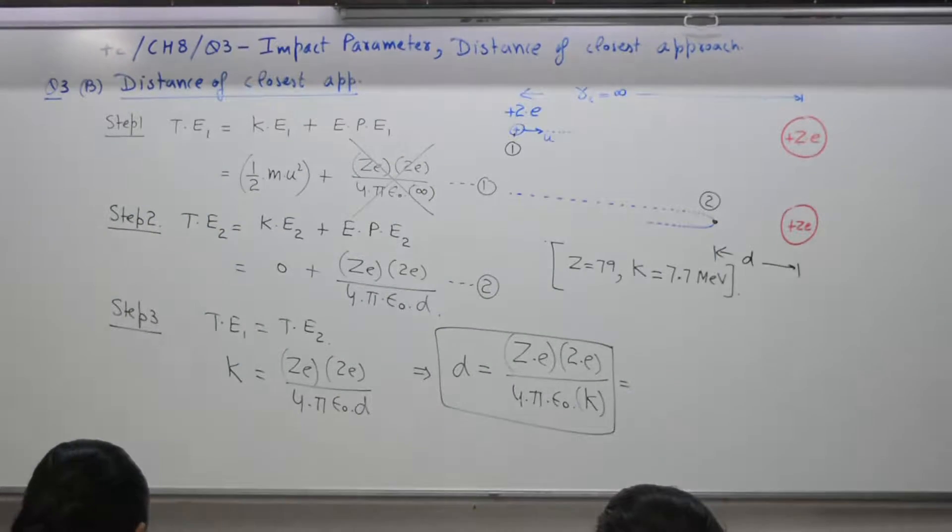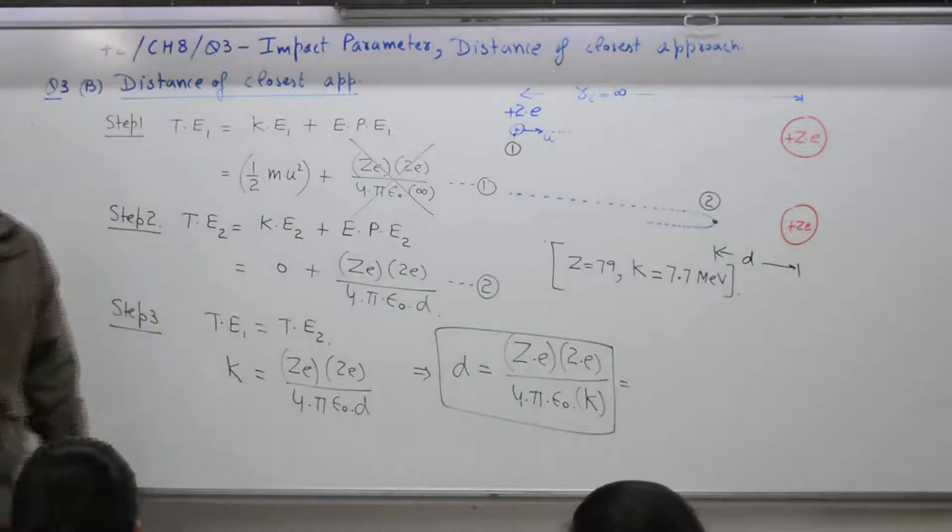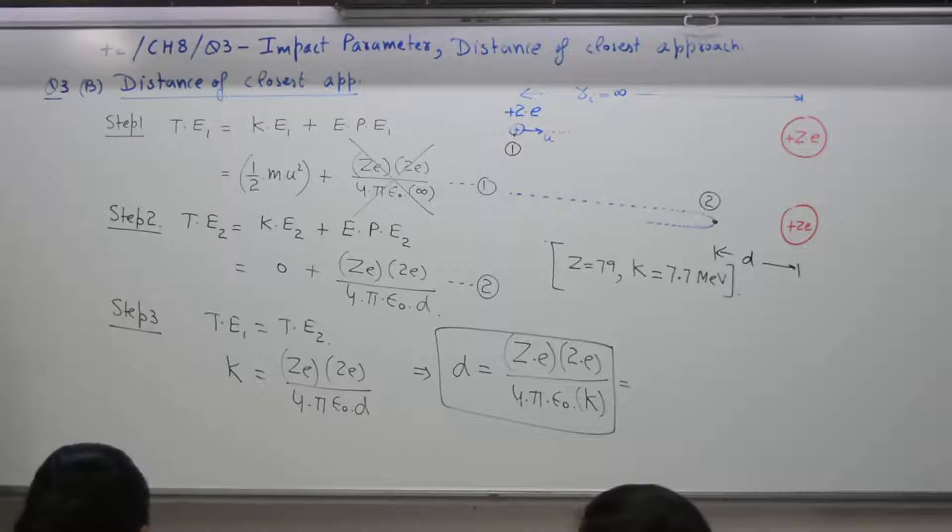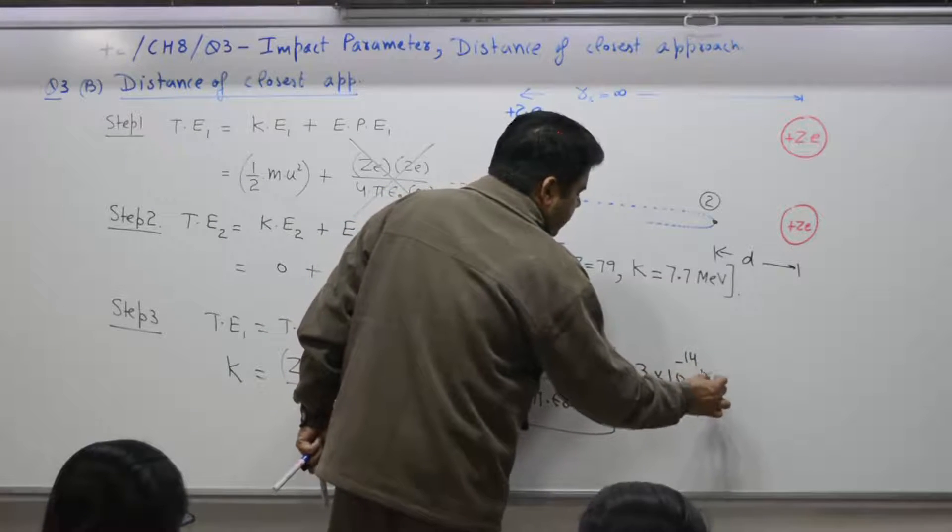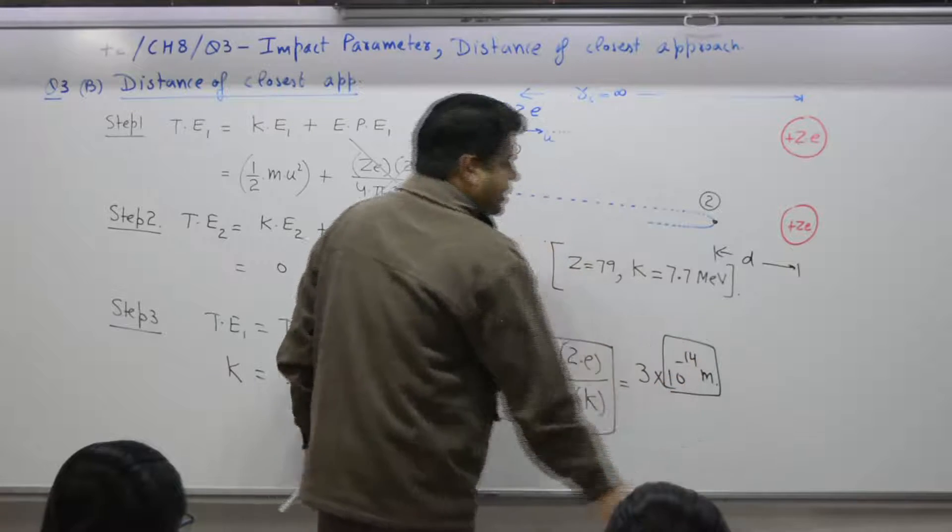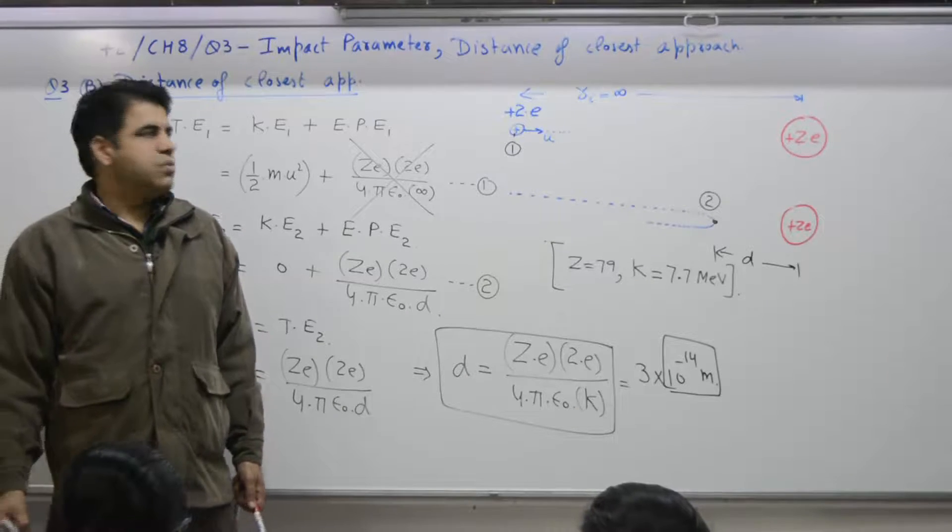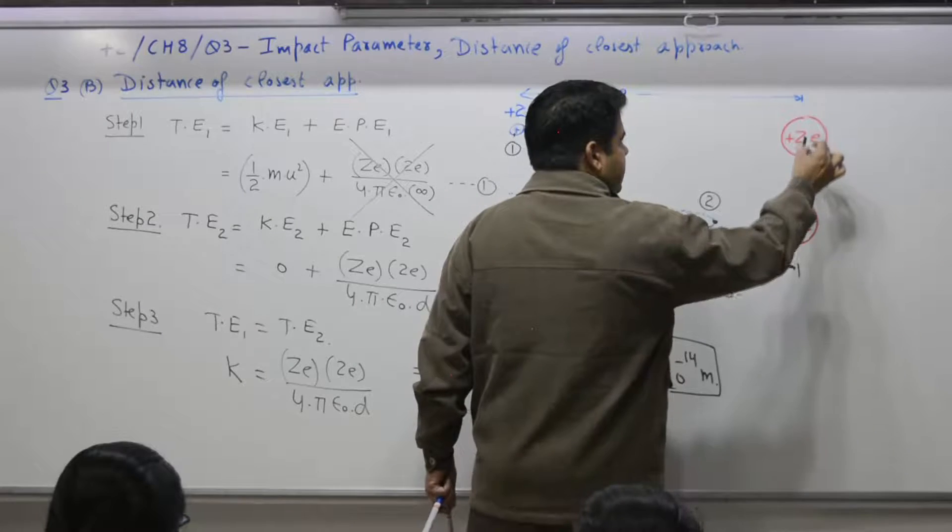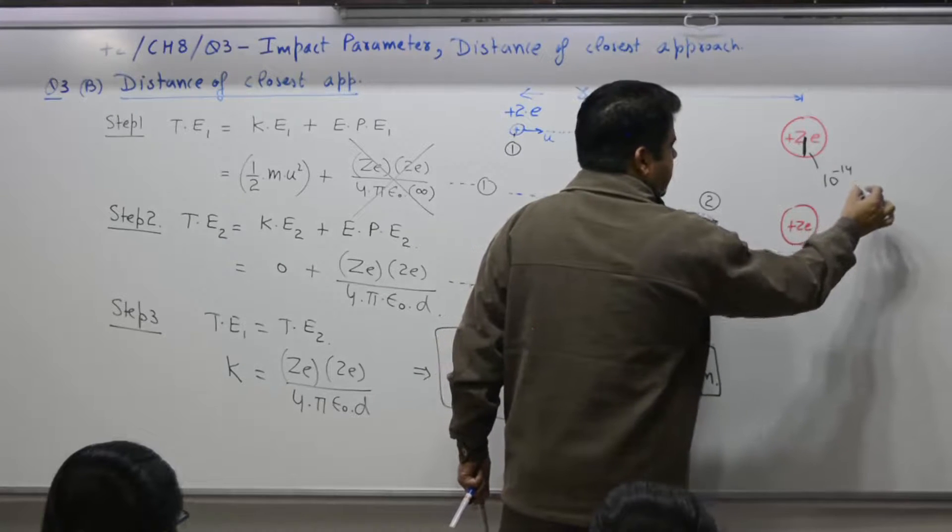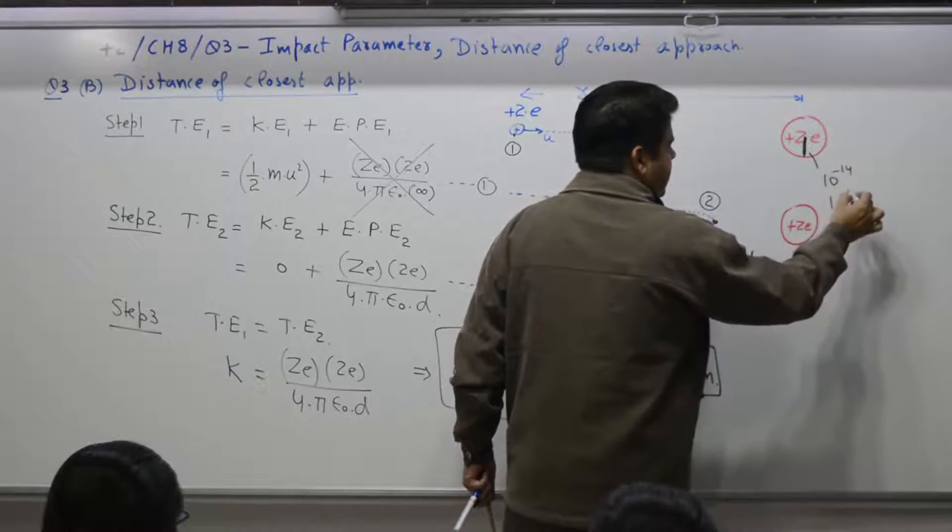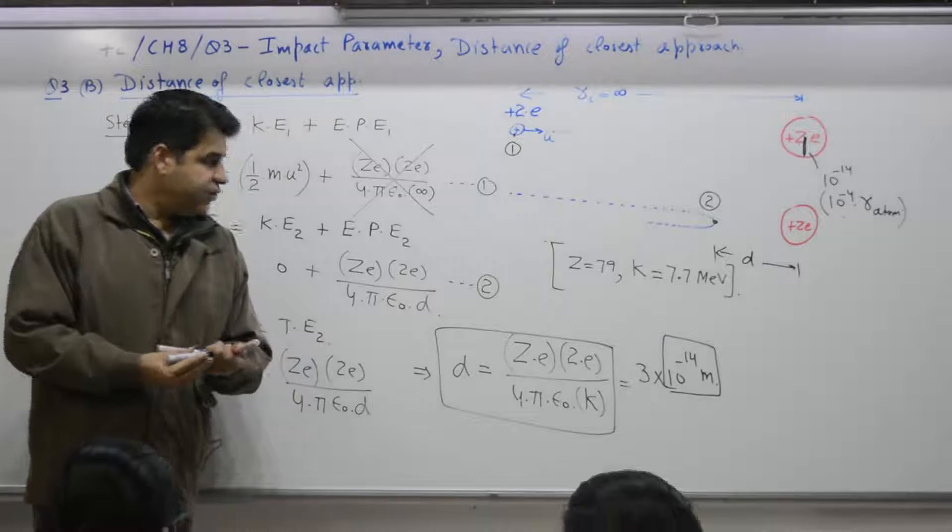Yes. Comes out to be what? D comes out to be what? On solving this, it is given in the derivation. Approximately 3 into 10 raised to the power minus 14 meter. This is what is important. Nucleus size is of what order? 10 raised to the power minus 14. This radius is of order 10 raised to the power minus 14. Which is equal to what? 10 raised to the power minus 4 times. This is 10 raised to the power minus 4 times the radius of a atom.